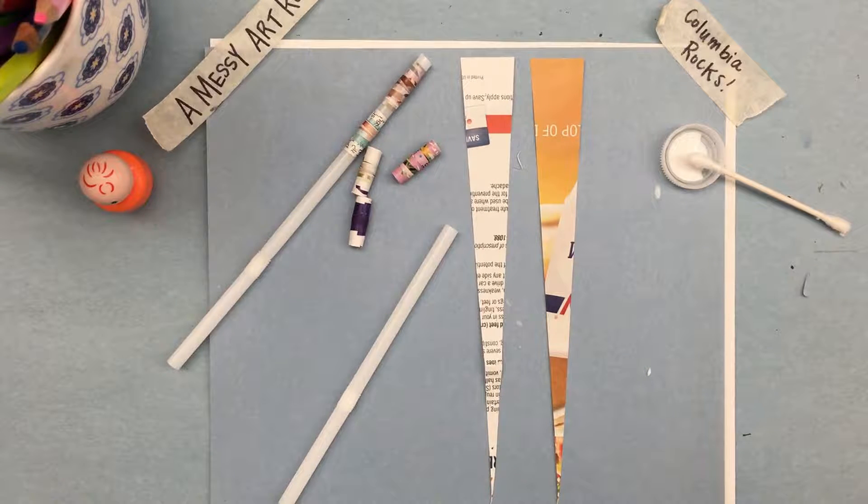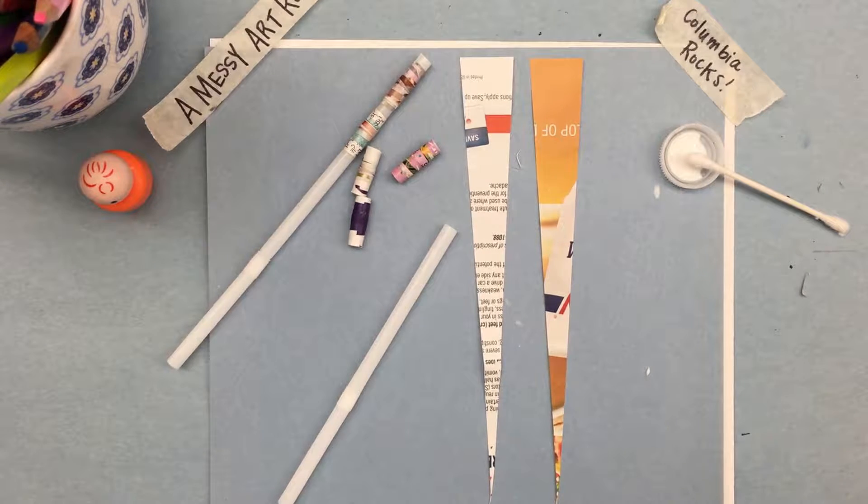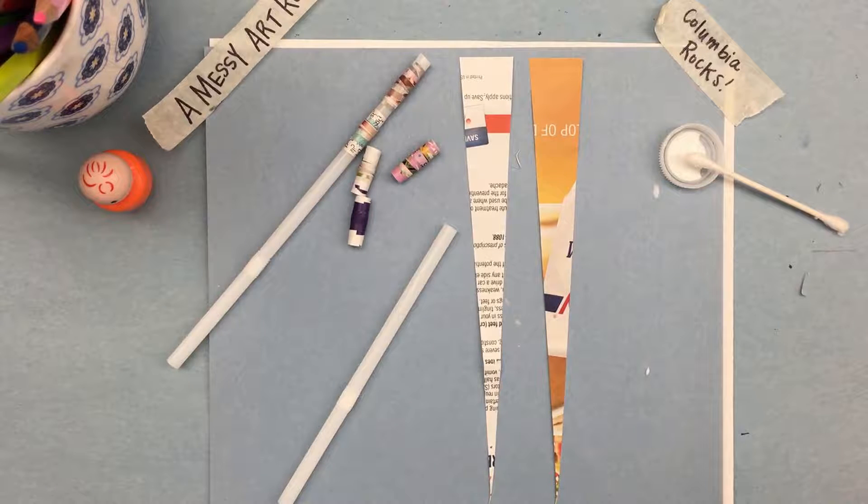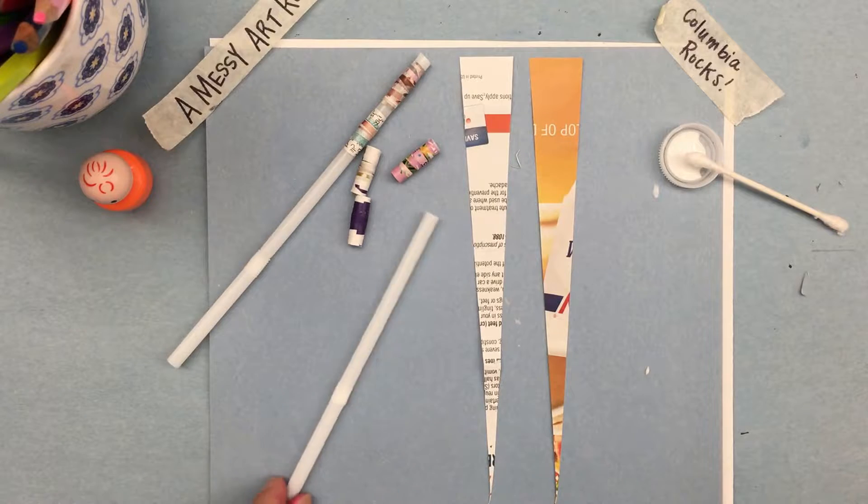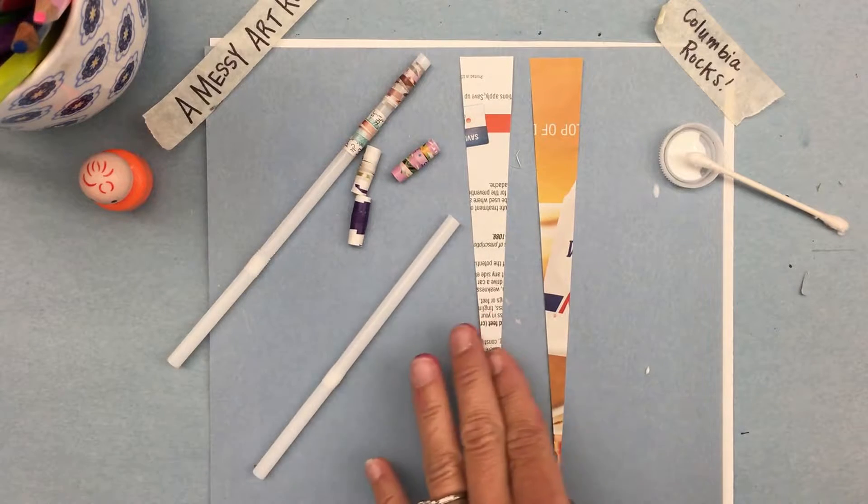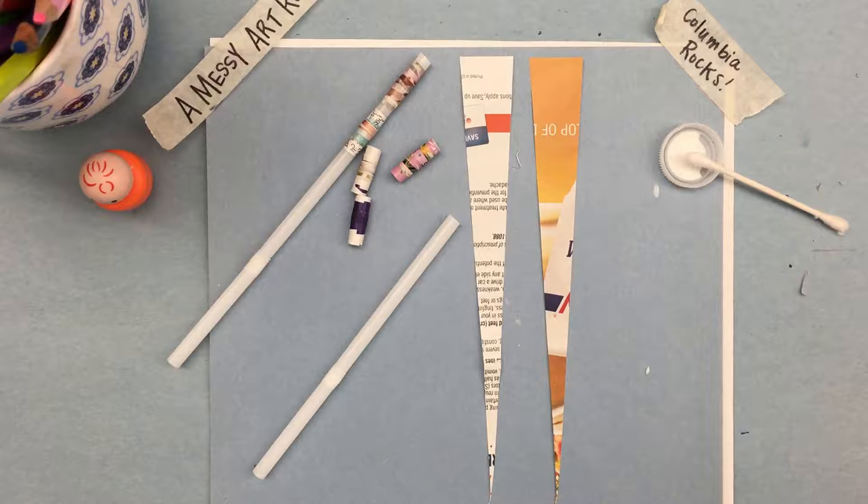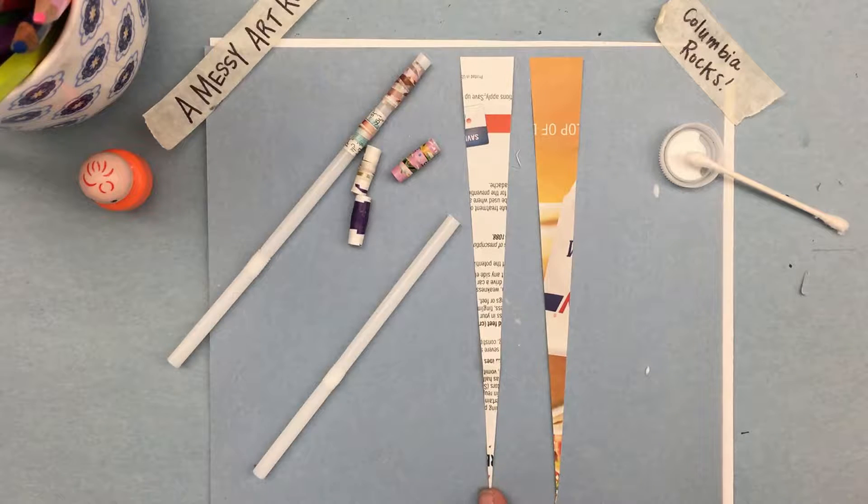Okay, let's get started making beads using recycled materials. One of my favorite things about this project is all the materials are essentially free. This straw came from a fast food restaurant and the magazines I cut up old junk mail. It's actually a catalog I received in the mail.